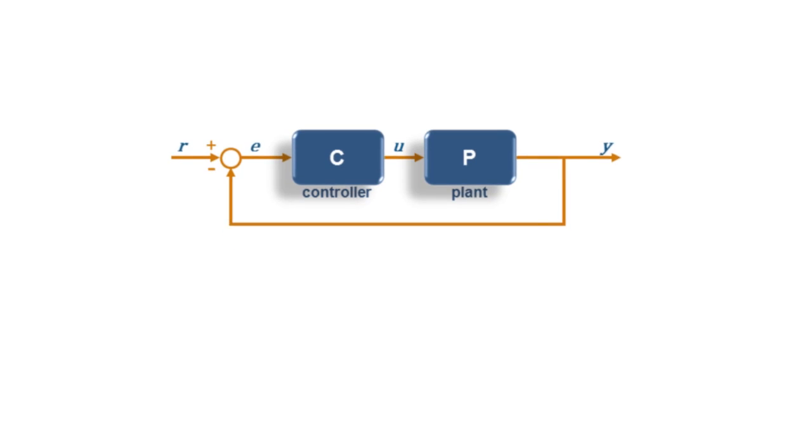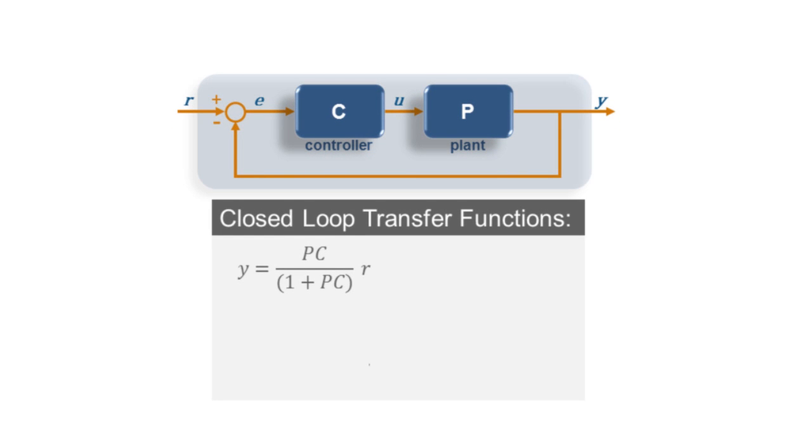And just by doing a little algebra, we find that the closed-loop transfer function from the reference input R to the output Y now becomes PC over 1 plus PC. Similarly, if we look at the error, we find that the closed-loop transfer function from the reference input R to the error E is 1 over 1 plus PC. These two transfer functions define the main characteristics of this closed-loop architecture.